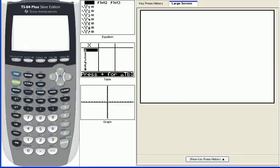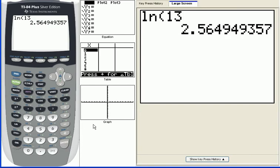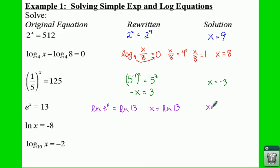And if we plug it into your calculator, ln of 13 is equal to 2.5649. So don't forget to round to 4 decimals. So we're going to say x is approximately 2.5649.